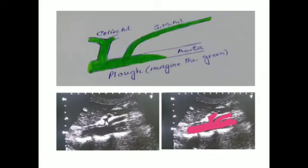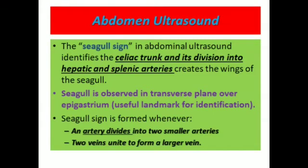The celiac artery is dividing into two branches. This is a colorful image of the same, showing these three main arteries: the aorta, the SMA, and the celiac artery. The seagull sign in abdominal ultrasound identifies the celiac trunk and its division into the hepatic and splenic arteries, which create the wings of the seagull.